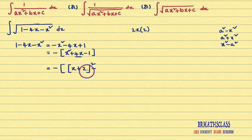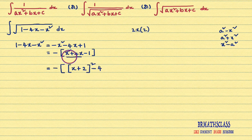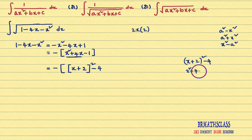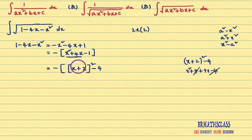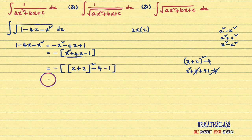Then, always subtract the square of this number. What is 2²? That is 4. If I expand (x + 2)² − 4, I will get x² + 4x. You can check: (x + 2)² − 4 expands to x² + 4 + 4x − 4, and plus 4 minus 4 cancels, leaving x² + 4x only. So in place of x² + 4x, I can write this expression. Now what is remaining? The remaining one is minus 1, which I will write here. That equals minus of (x + 2)² − 4 − 1.